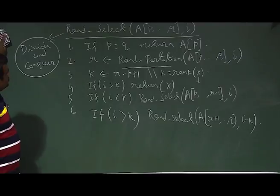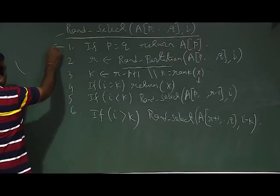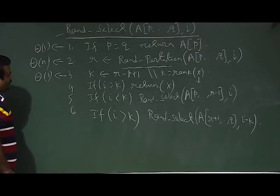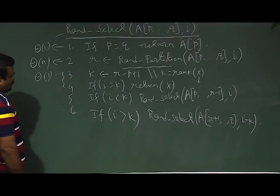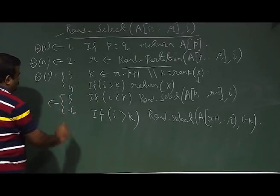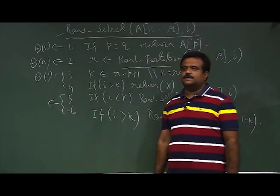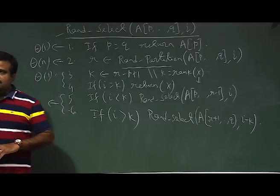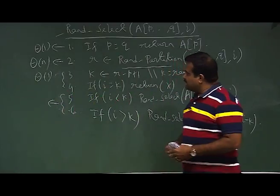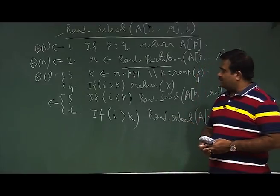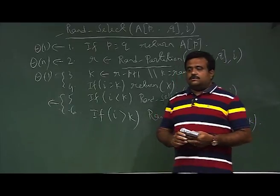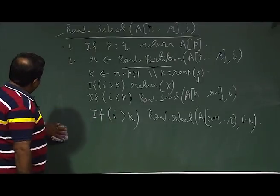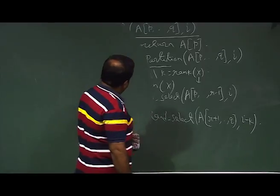What is the time complexity? It depends on the partition. The partition itself takes linear time. If the pivot is good, the subproblem is of size n/2 or some fraction of n. But in the worst case it is n minus 1, giving O(n²). This is a randomized version, so we want to analyze the average case — that is, the expected run time.